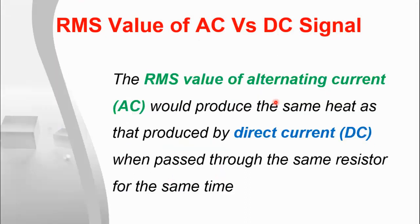In other words you can say that the RMS value of the alternating current would produce the same heat as that produced by the direct current when passed through the same resistor for the same time. It means that whenever you calculate the total power consumed by the load, you always take the RMS value of the alternating current and voltage, and the power would exactly be the same if that load would be energized by the DC voltage.